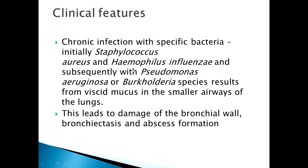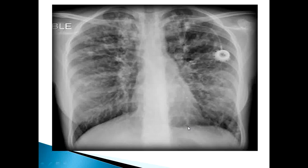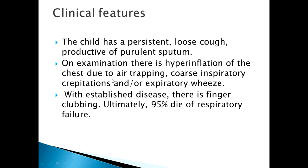Chronic infection with specific bacteria — initially Staphylococcus aureus and Haemophilus influenzae, and subsequently Pseudomonas aeruginosa or Burkholderia species — results from viscid mucus in the smaller airways, leading to damage of the bronchial wall, bronchiectasis, and abscess formation. Chest X-ray shows bilateral haziness due to ongoing infection. On examination there is hyperinflation of the chest due to air trapping, coarse inspiratory crepitations, and expiratory wheeze. With established disease, finger clubbing is present.